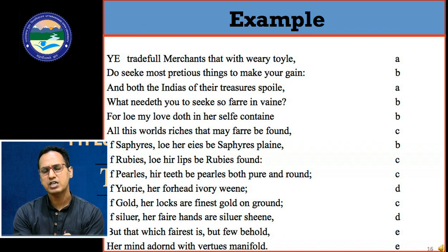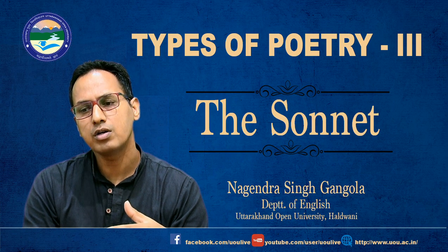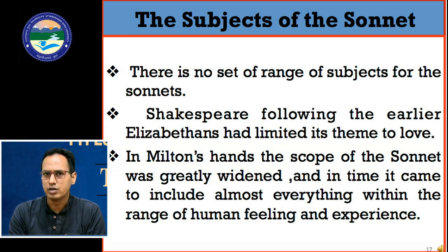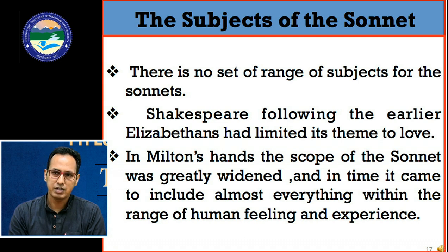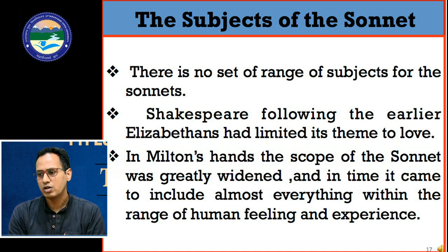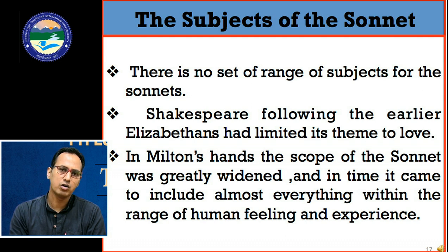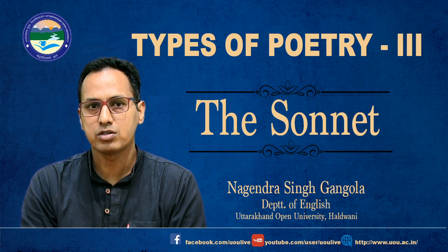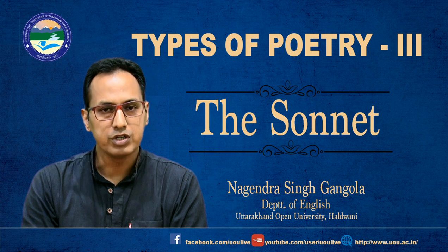Now, what kind of subjects are discussed in sonnets? We cannot set the range of subjects for the sonnet to just one or two topics. Shakespeare and the Elizabethans limited sonnets to a theme of love and love affairs. But in Milton's hands, the scope of the sonnet was greatly widened, and in further time sonnet developed into different kinds of subjects — it came to encompass almost everything within the range of human feelings and experience. Nowadays, sonnet can be used for any kind of topic to describe any kind of human feeling. It is a musical poem whose parent form is the lyric.